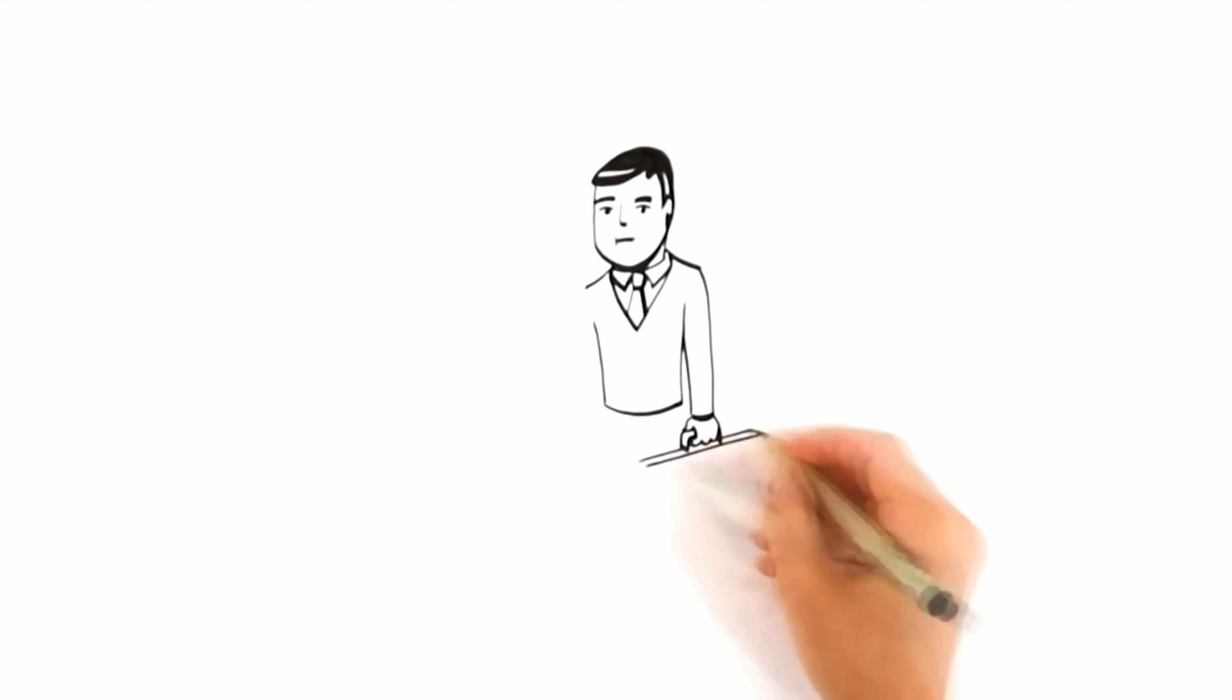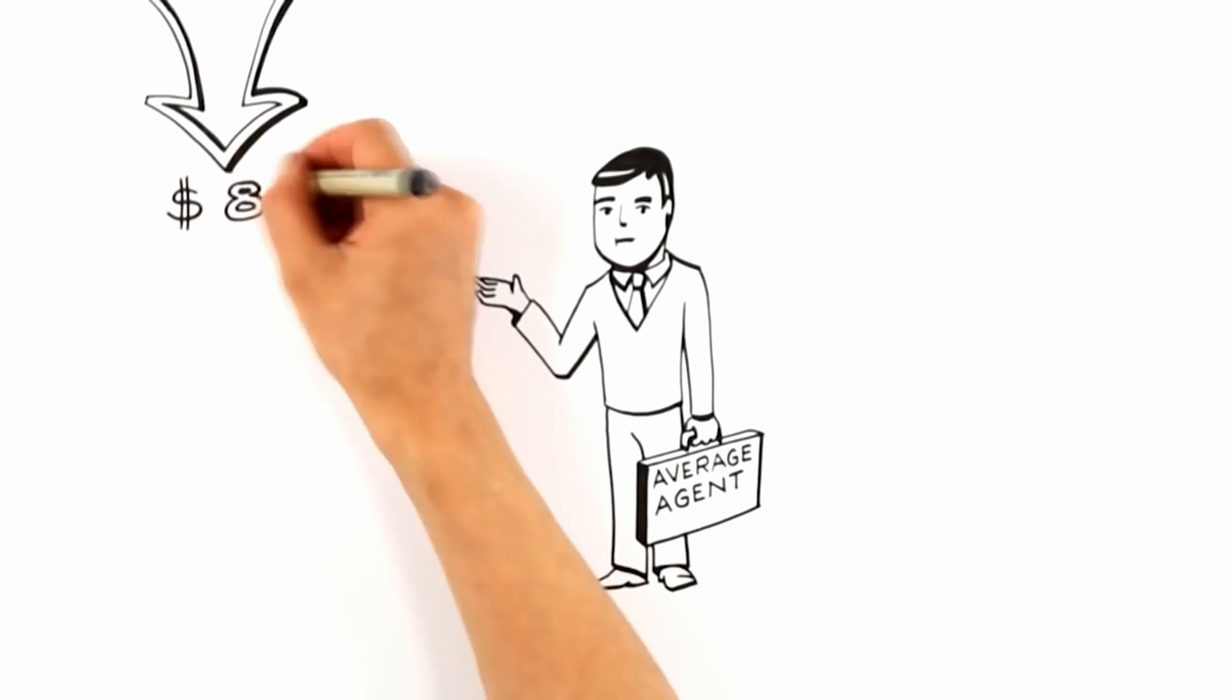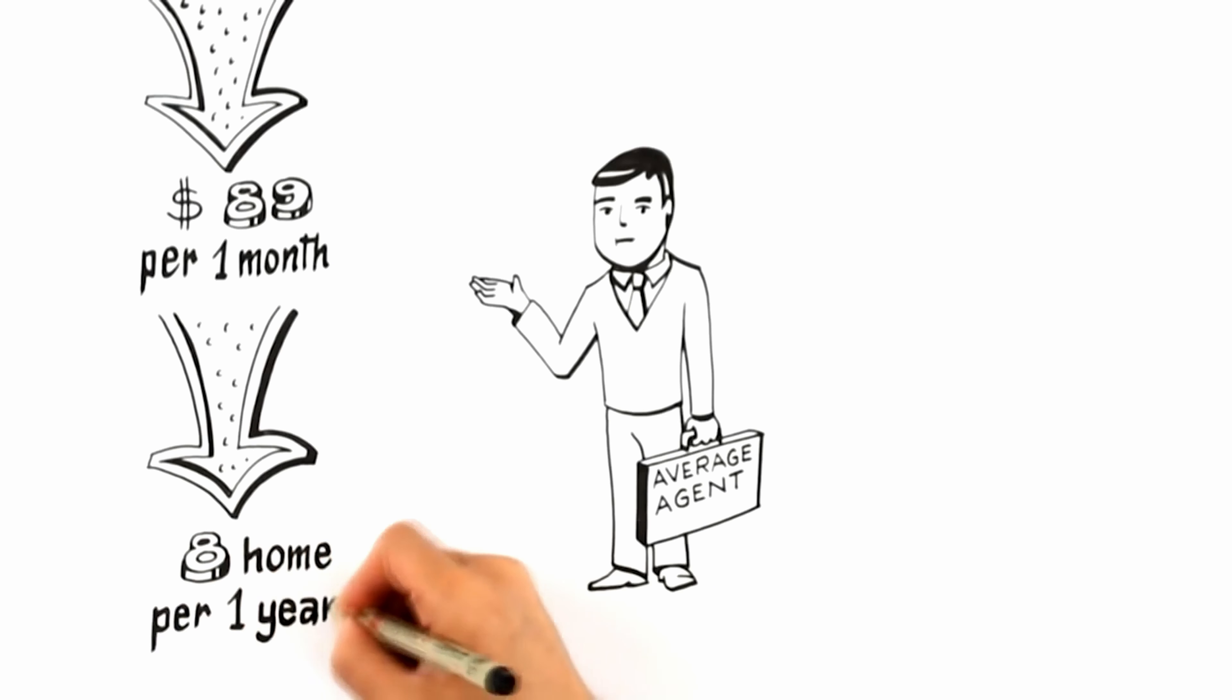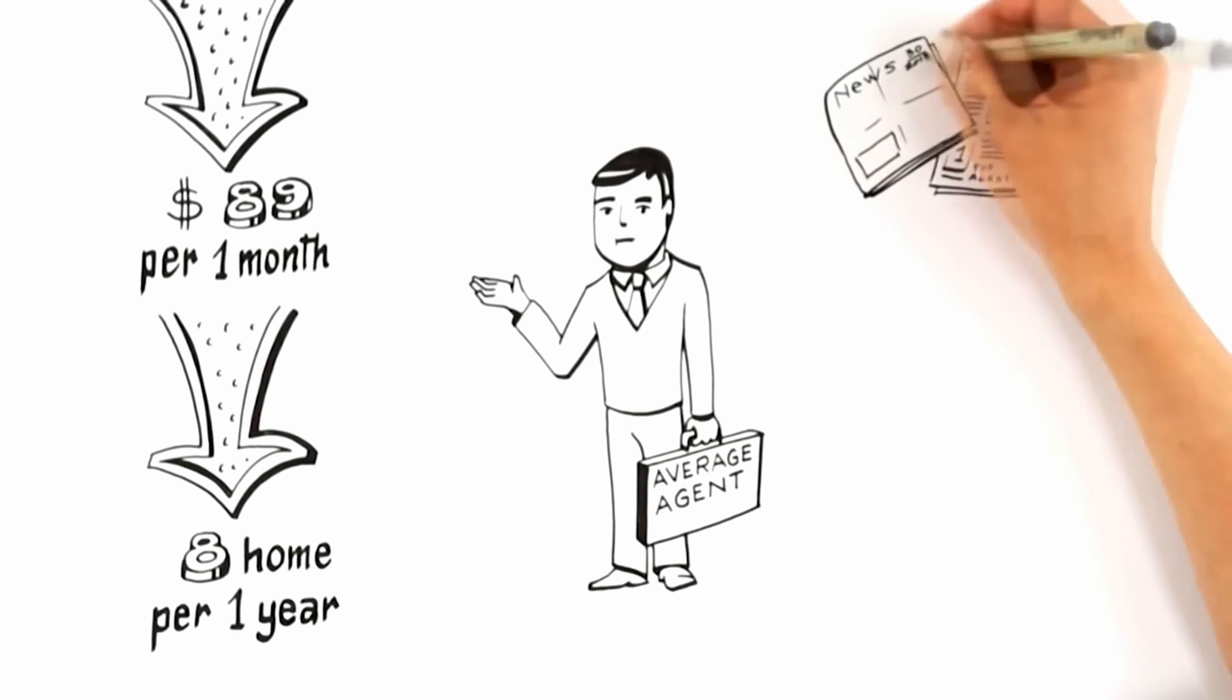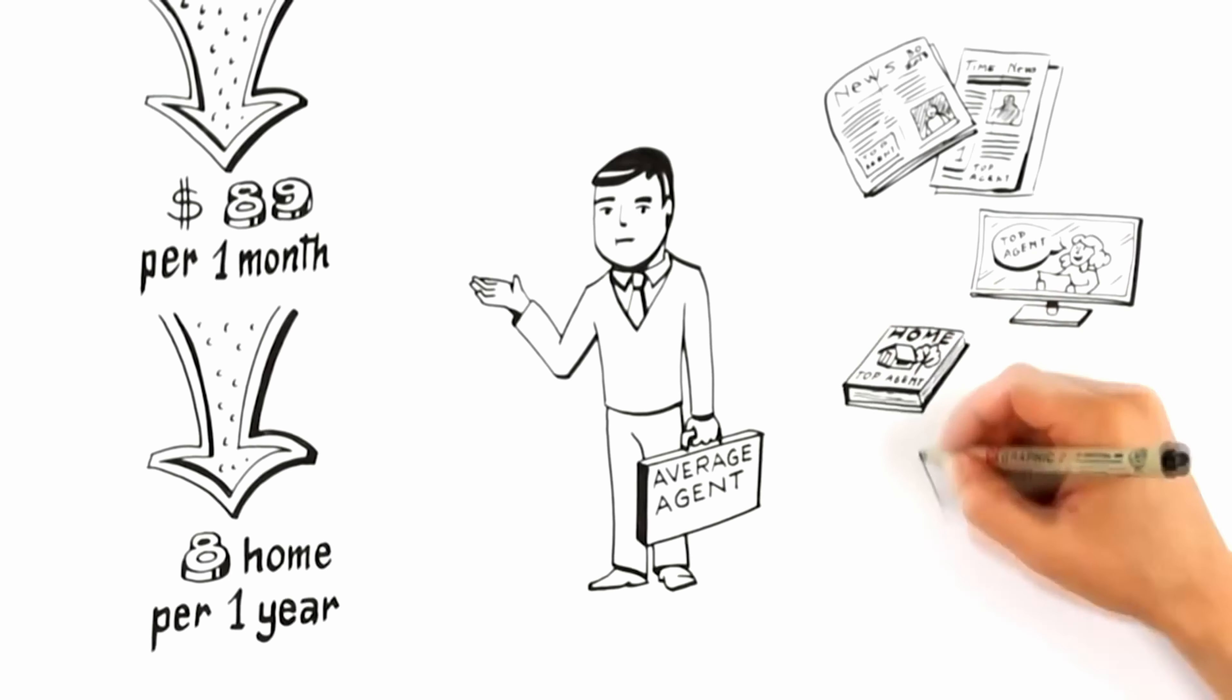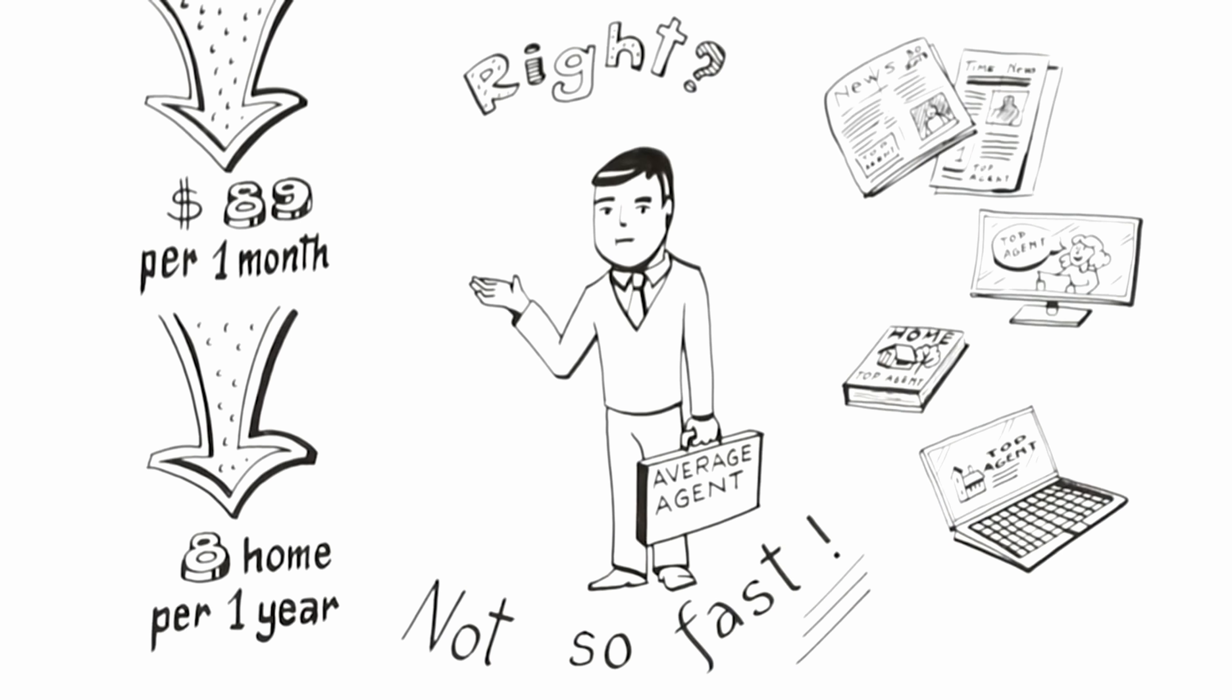Exposing your home to the market requires marketing. Research shows that the average agent only spends $89 a month on marketing and only sells an average of 8 homes per year. On the other side, top agents will tout their large budgets for newspaper, TV, home magazines, and a list of hundreds of websites where they advertise. So you'd think that the answer is obvious. Hire the top agent, right? Not so fast.